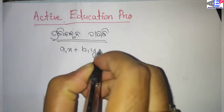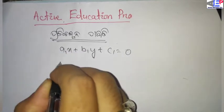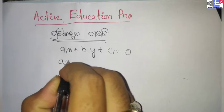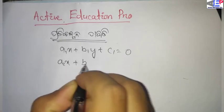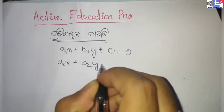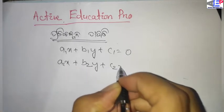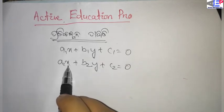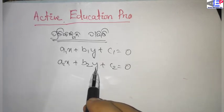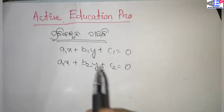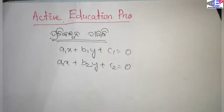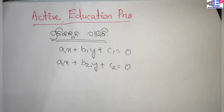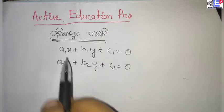So we will have a1x plus b1y plus c1 equal to 0, then a2x plus b2y plus c2 equal to 0. I am going to find the sum of y, and the sum of y is equal to 0.